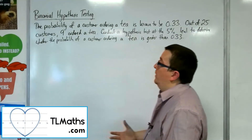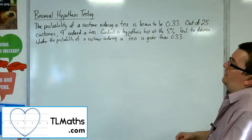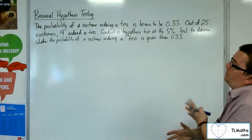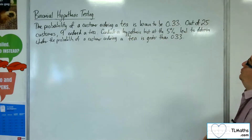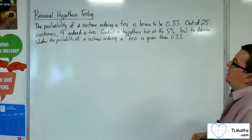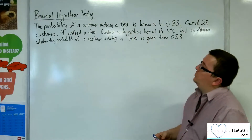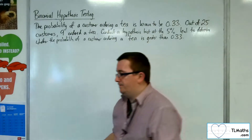In this video, we're going to look at another critical region method hypothesis test. The probability of a customer ordering a tea is known to be 0.33. Out of 25 customers, 9 ordered a tea. Conduct a hypothesis test at the 5% level to determine whether the probability of a customer ordering a tea is greater than 0.33.